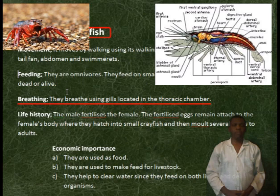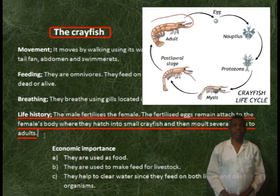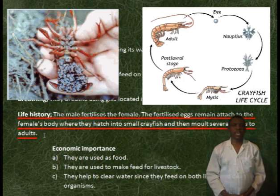Breeding. They breathe using gills located in the thoracic chamber. Life history: the male fertilizes the female. The fertilized eggs remain attached to the female's body, where they hatch into small crayfish and then moult several times into adults.